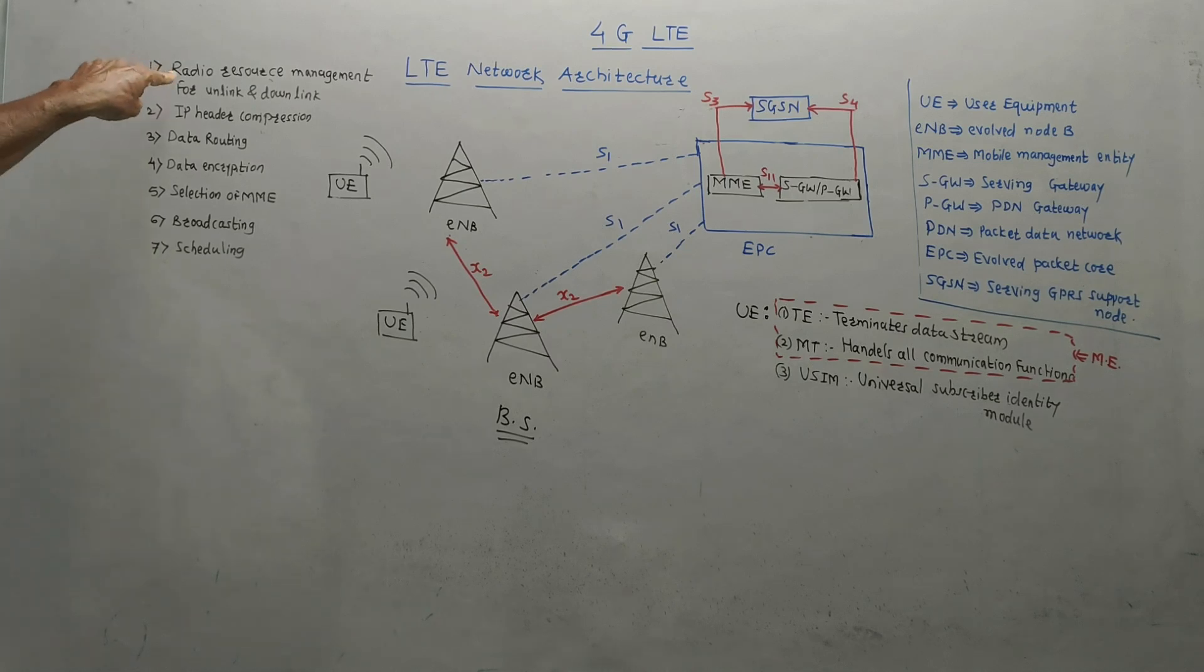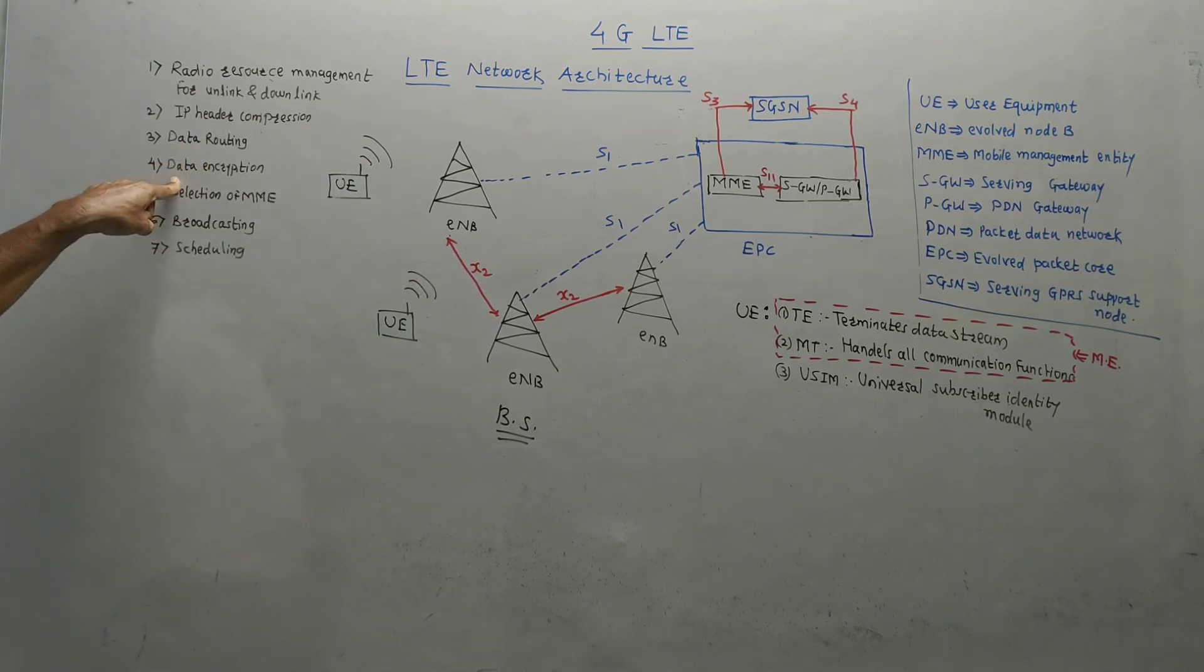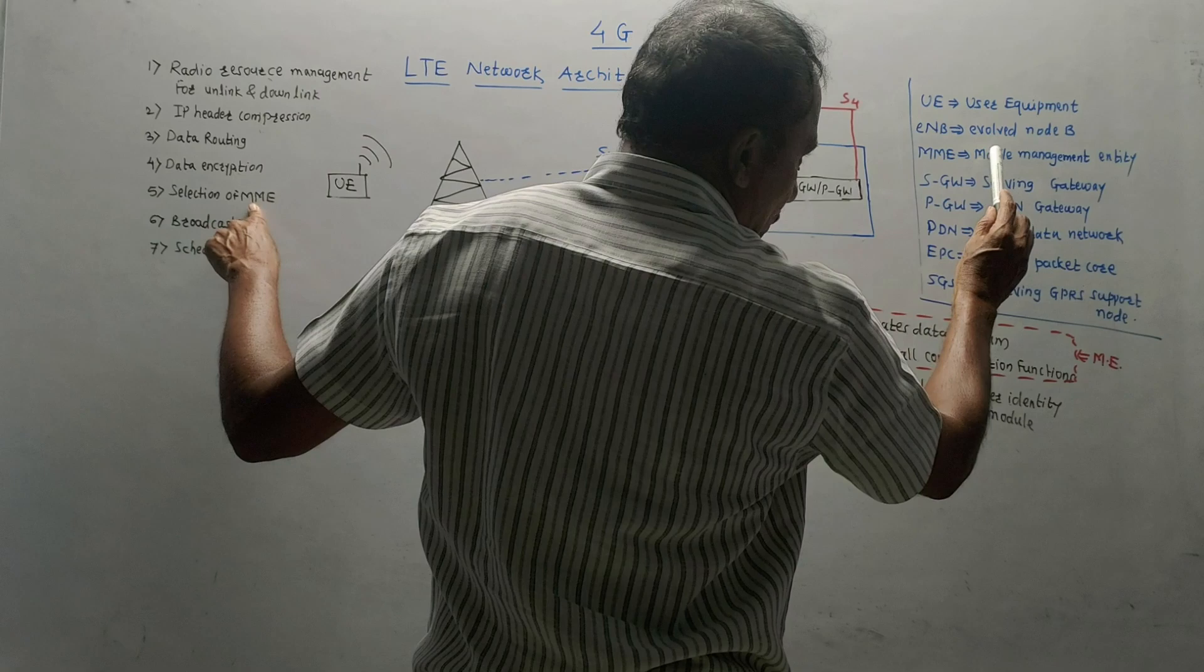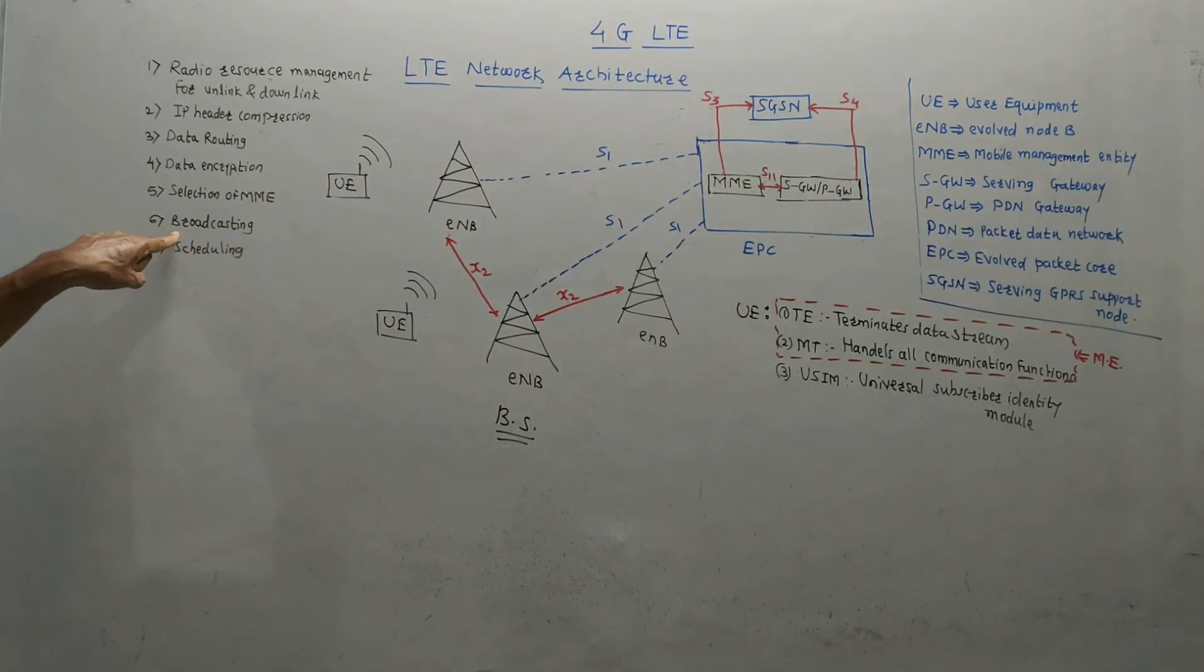I have made a list of functions done by this base station. First is radio resource management for uplink and downlink, second is IP header compression, third is data routing, routing of user data, then data encryption related to user data, then selection of MME, that is selecting a particular mobile management entity, next broadcasting and scheduling of calls.